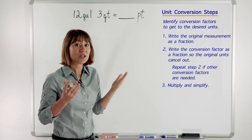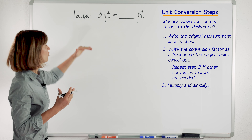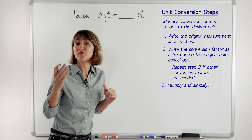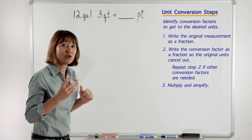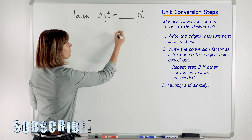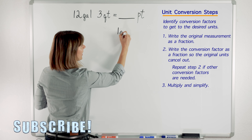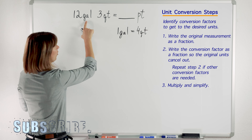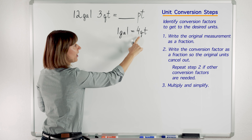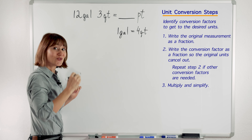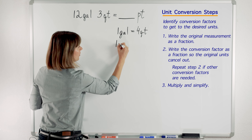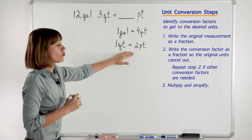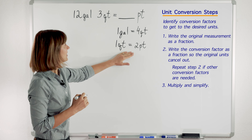First, we need to identify what conversion factors will help us to go from gallons straight to pints. Let's look into a conversion table — we can take conversion factors right from the table. We have 1 gallon equals 4 quarts, so we can go from gallons to quarts. But to get to pints, we can use another conversion factor: 1 quart equals 2 pints. So these two conversion factors will help us get to pints.